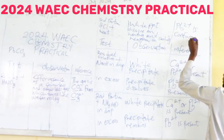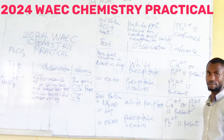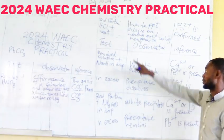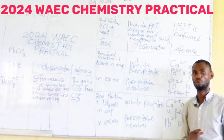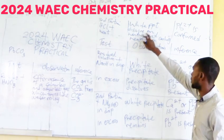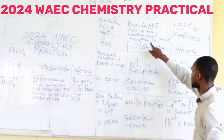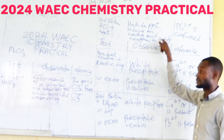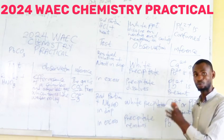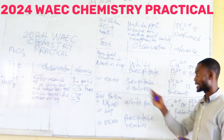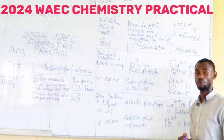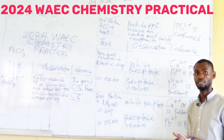Pb²⁺ is confirmed because it is only lead that can exhibit such distinctive characteristics. The reason for adding HCl is to form lead(II) chloride. Lead(II) chloride is insoluble on cooling, so the white precipitate dissolves on heating and reappears on cooling — Pb²⁺ is confirmed. From this test, we have been able to identify Pb²⁺ and CO3²⁻. In the next episode, we are going to consider how to test for the anions, which is NO3⁻.